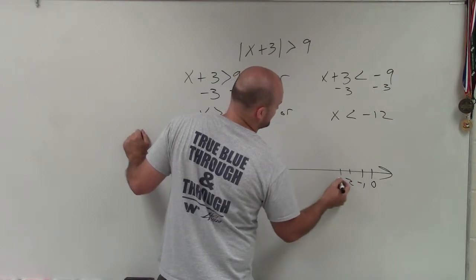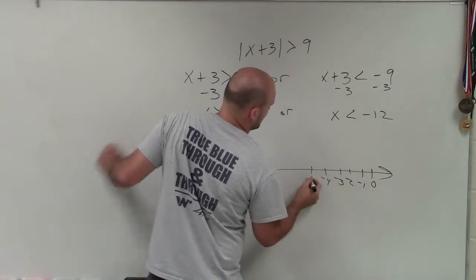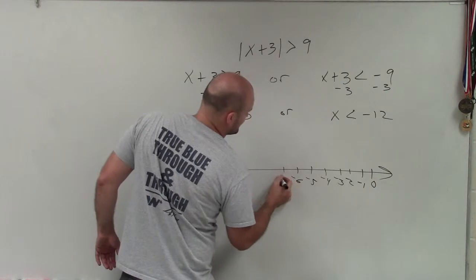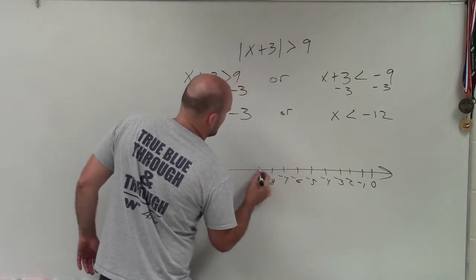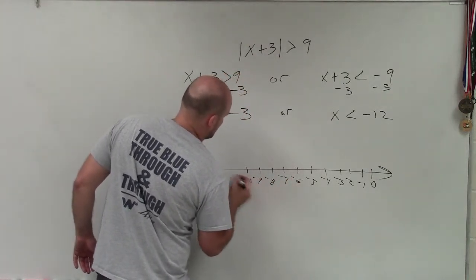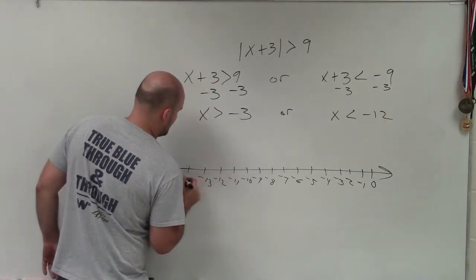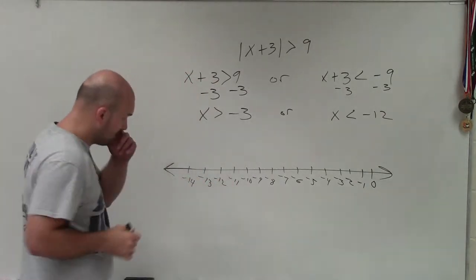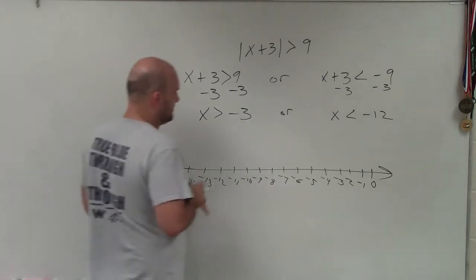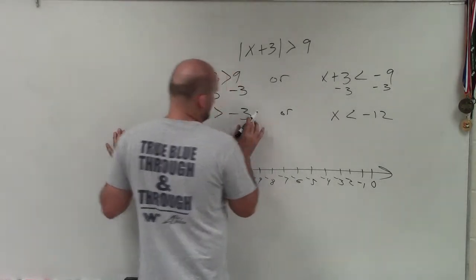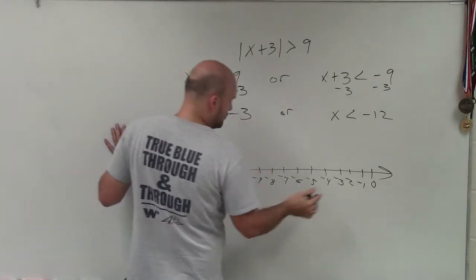Negative 1, negative 2, negative 3, negative 4, negative 5, negative 6, negative 7, negative 8, negative 9, negative 10, negative 11, negative 12, negative 13, negative 14. What I like to do when I'm graphing compound inequalities is I just put an open dot at negative 3 and negative 12.